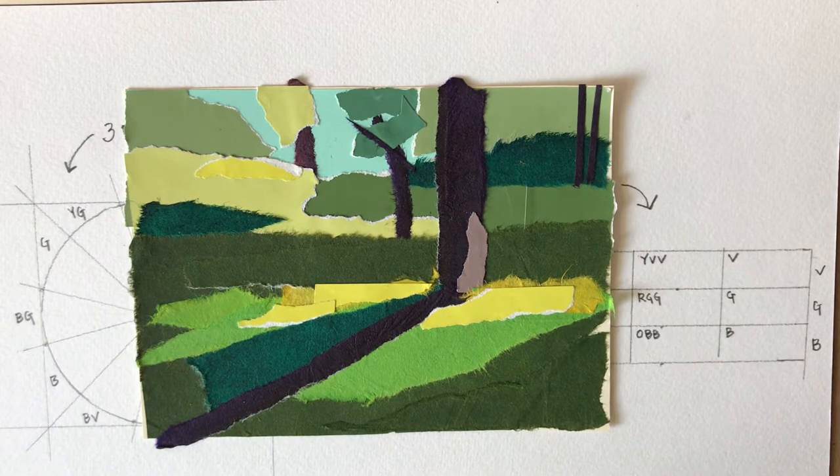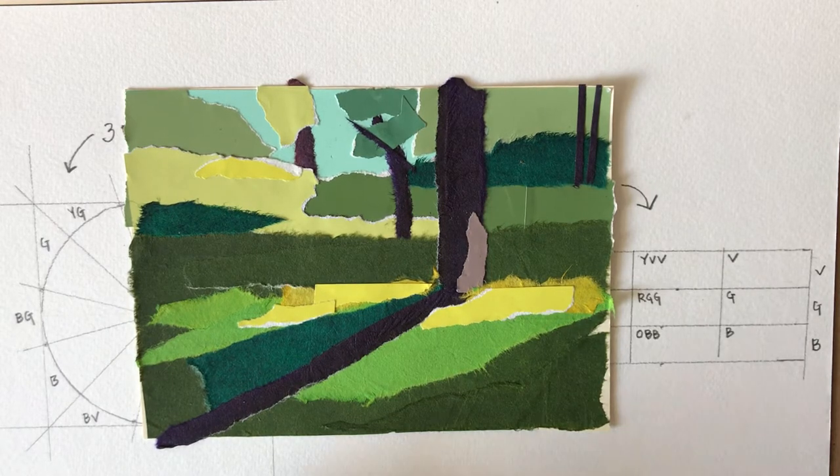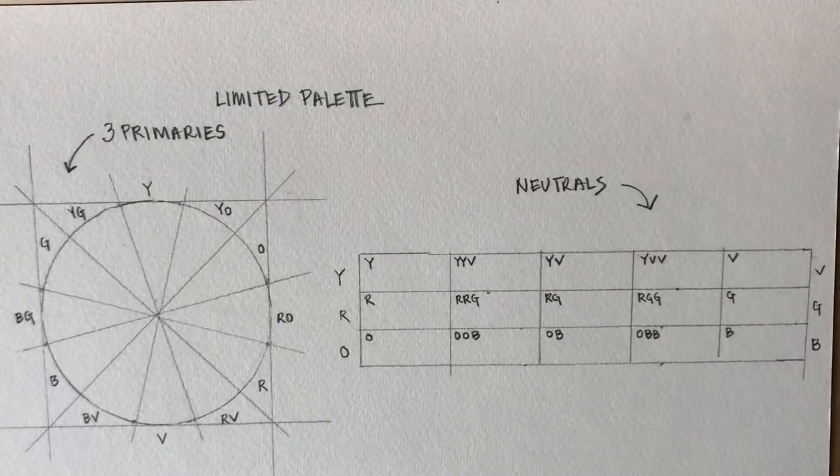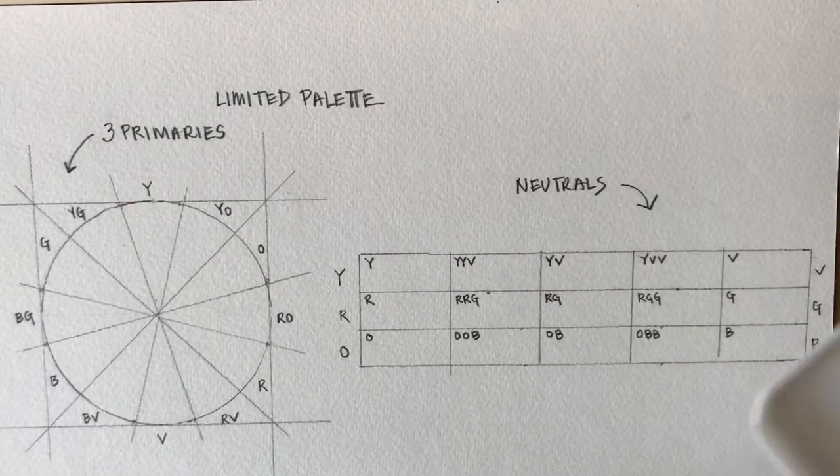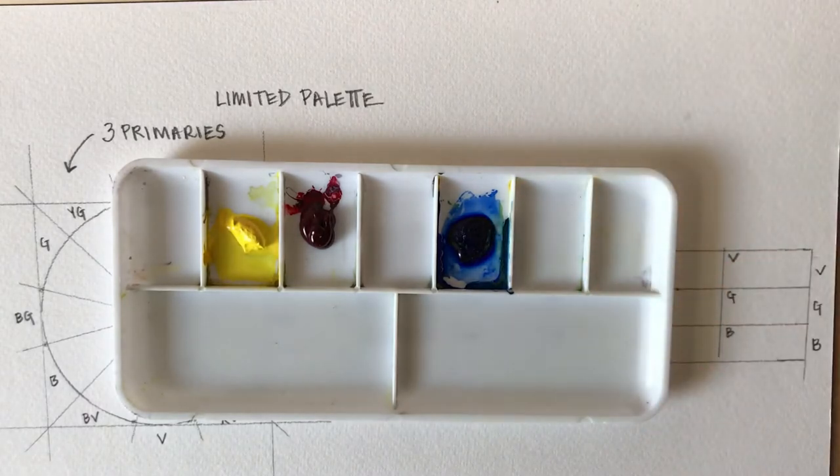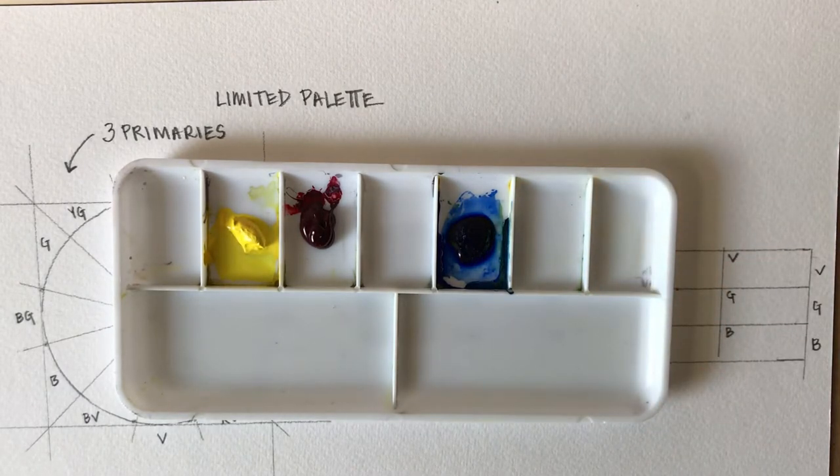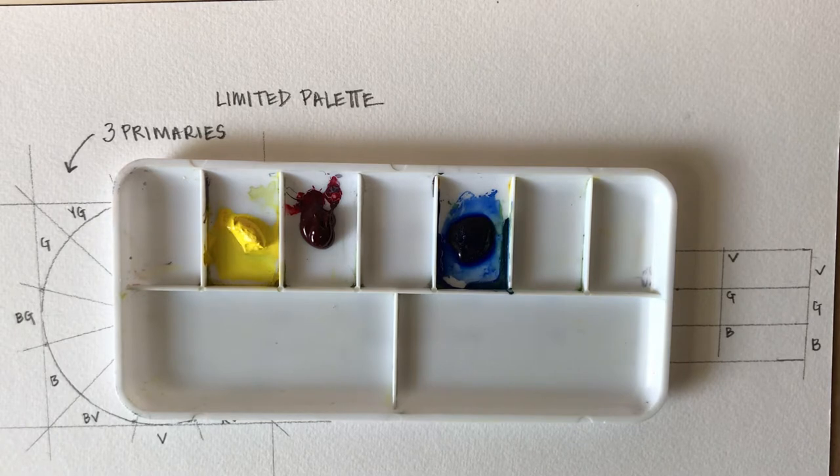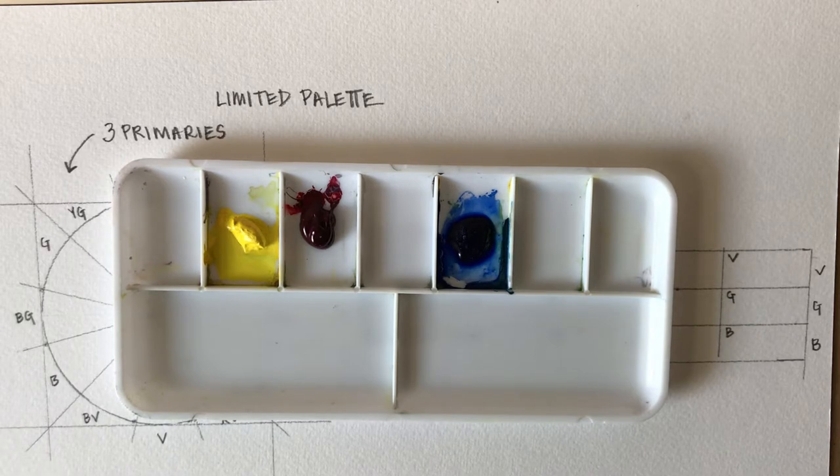So I like to use what I call a limited palette. A limited palette basically means that you're just using a limited number of colors. What I often use is just a yellow, a red, and a blue as you can see here on my little palette. You might think how could that possibly give you enough colors, but actually just three primary colors like these can result in an incredible array of color.